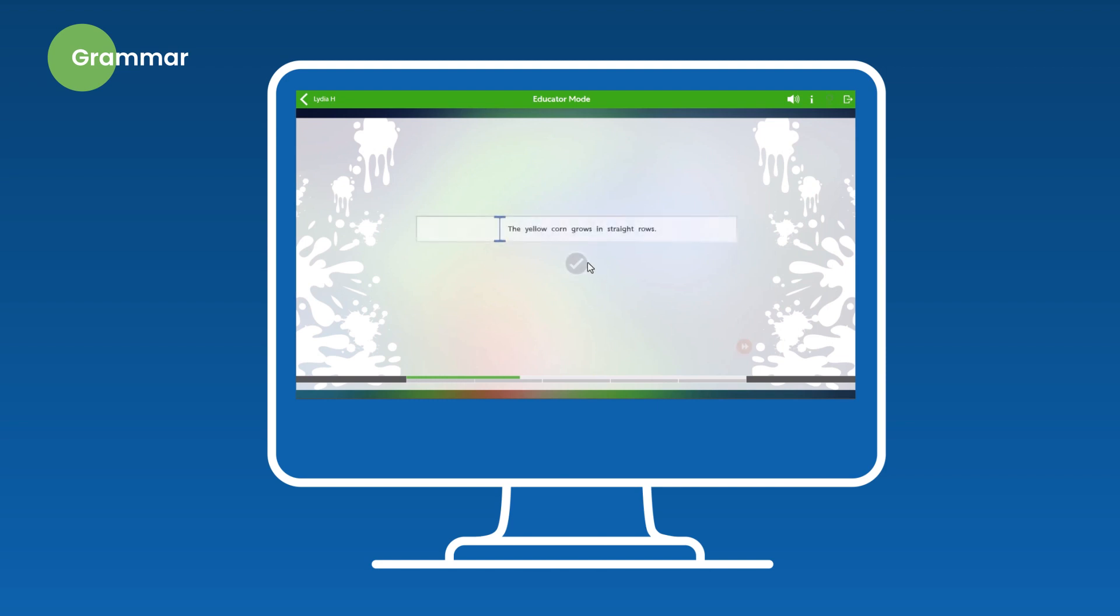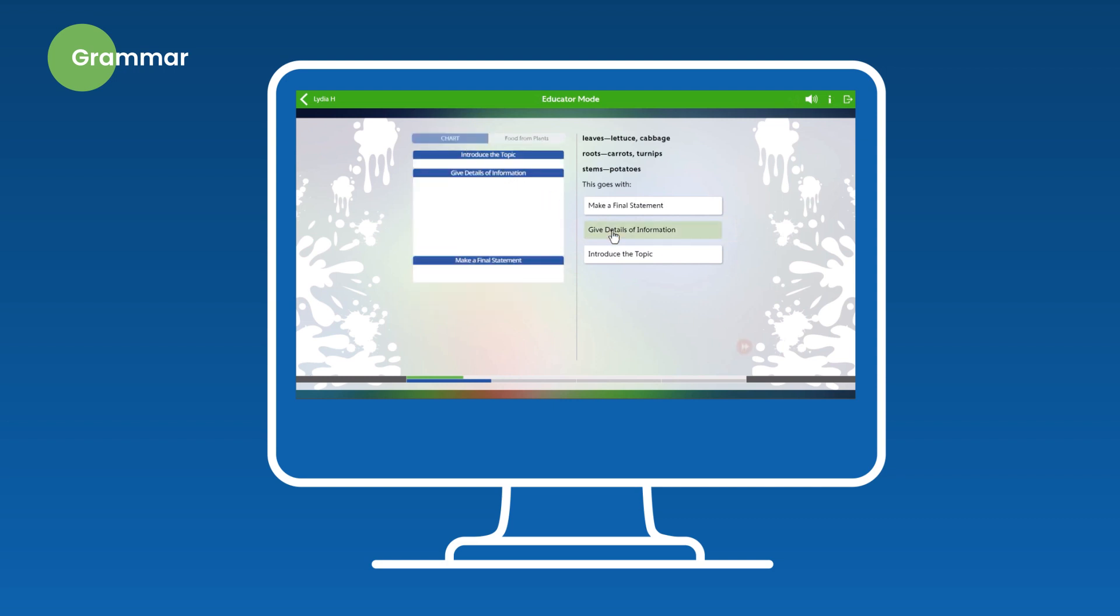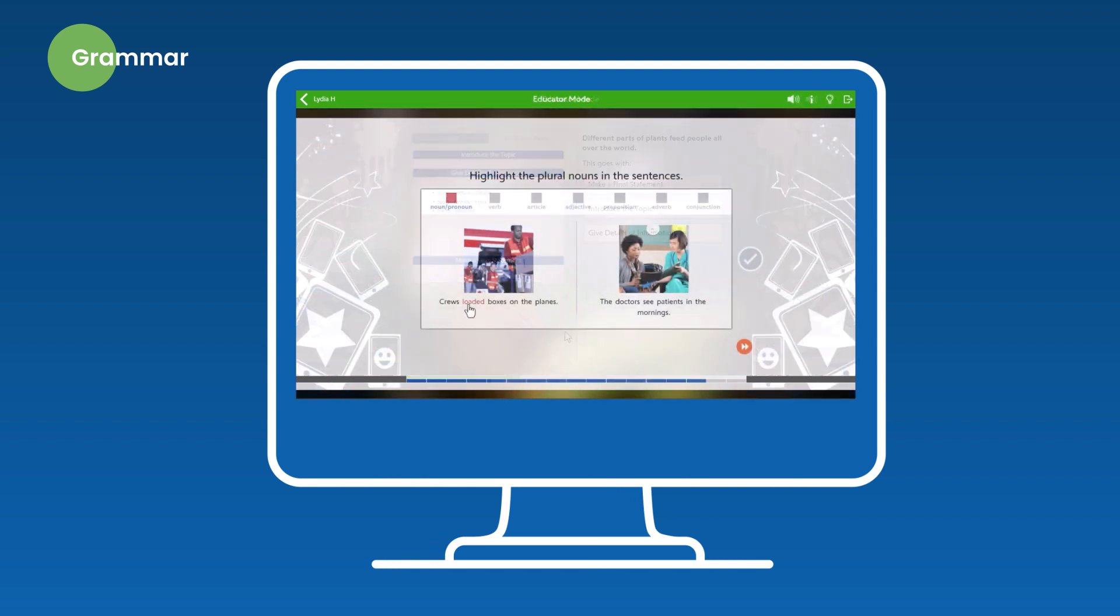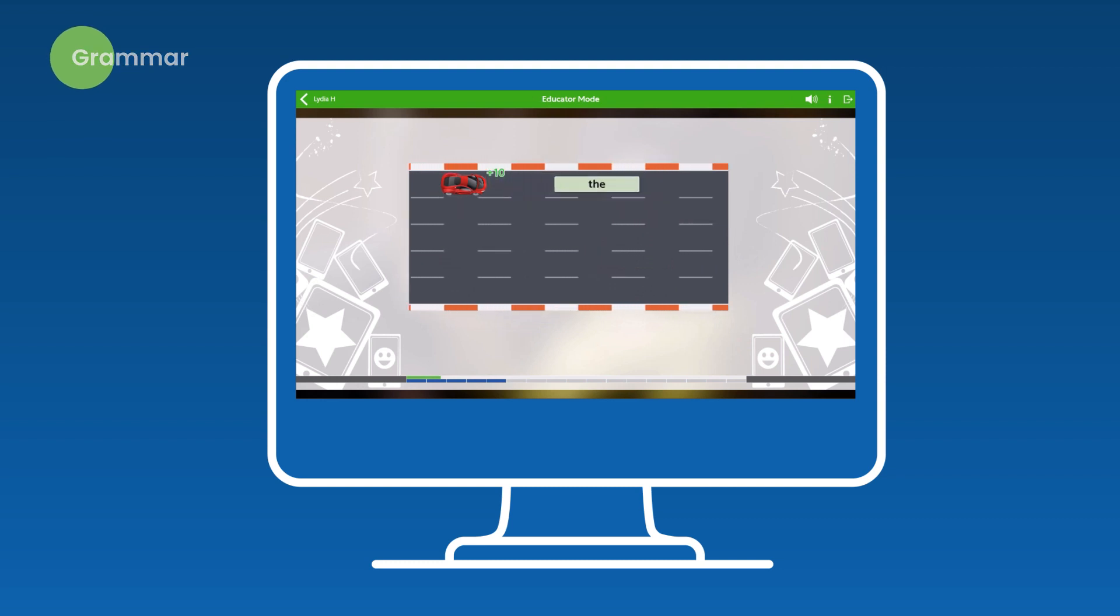In the grammar strand, students are provided with explicit teaching surrounding how text is organized both at the sentence and text level. This helps students to utilize their knowledge of syntax, intonation, and text organization to better aid their understanding of what they're reading.